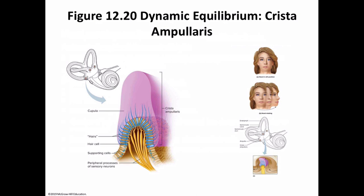Meniere's syndrome is a labyrinth disorder that seems to affect all three parts of the inner ear. Someone with it may have repeated attacks of vertigo, nausea, and vomiting. Balance is also disturbed, making standing straight up nearly impossible, and hearing may be impaired or lost completely. Mild cases can be treated by anti-motion drugs, a low-sodium diet, and diuretics to decrease endolymph fluid volume. In severe cases, draining excess endolymph or removing the entire malfunctioning labyrinth may be necessary.